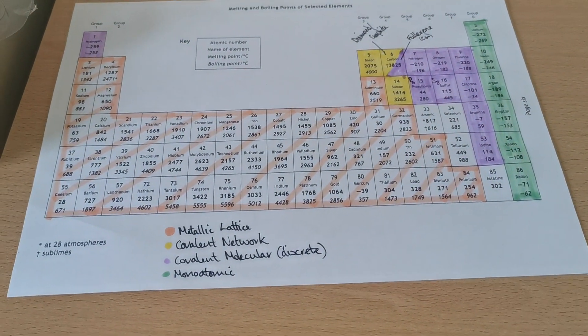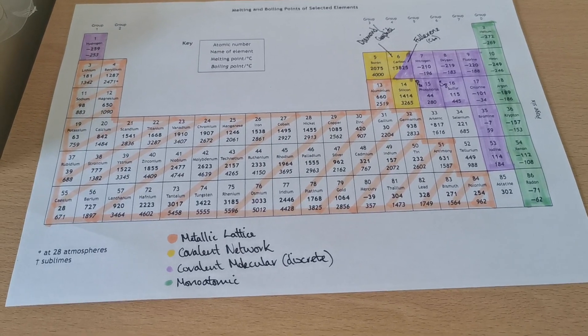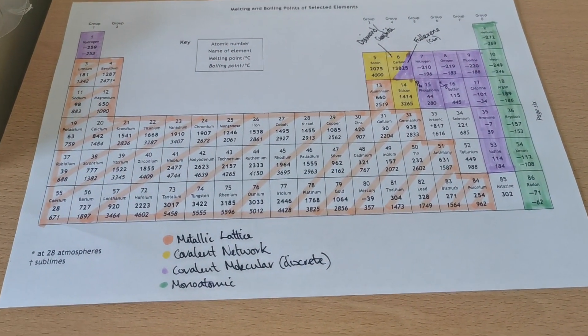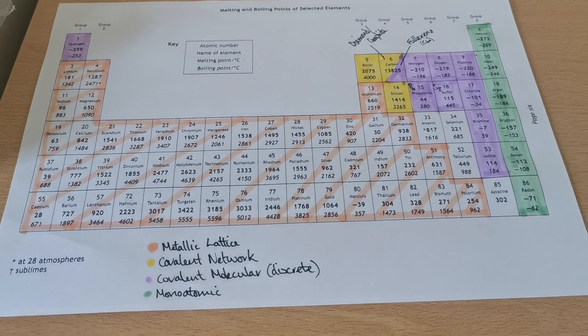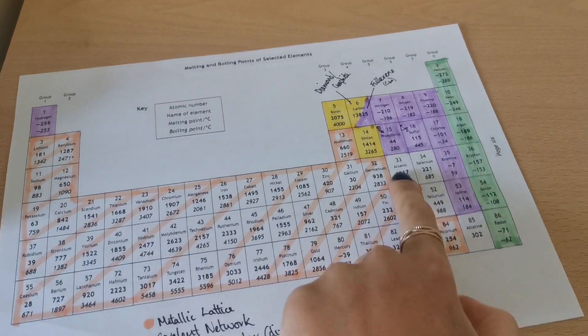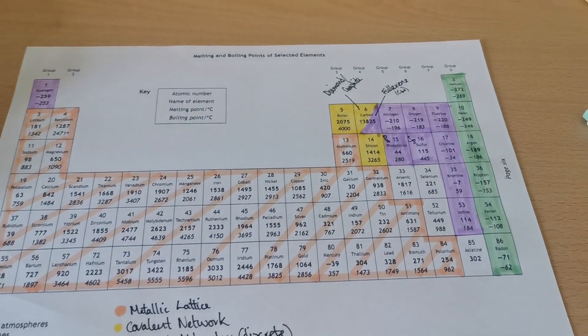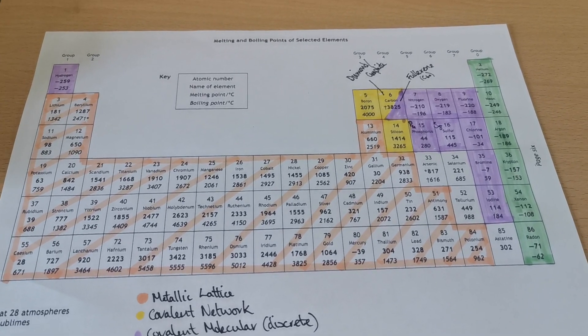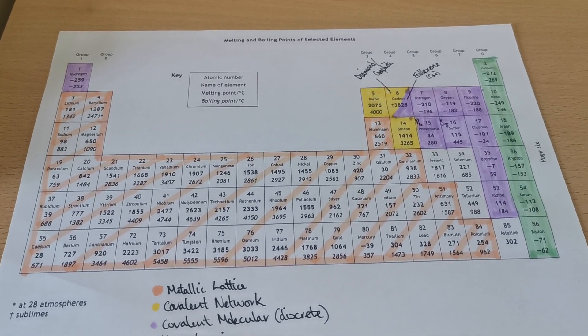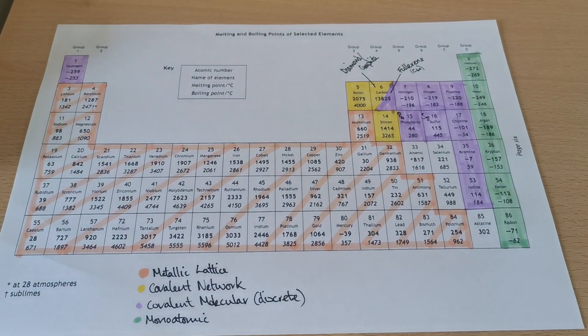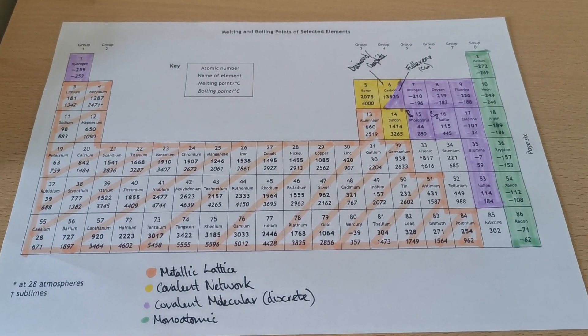Sometimes you only see these colour-coded periodic tables for the first 20 elements, up to calcium. And sometimes you'll only be asked about structures of those elements. But I think it's quite good to see the majority of them. You'll notice there are a few that aren't coloured in, and that's just because you don't really get asked about them. So as long as you have the main ones that are coloured in here, and you can remember their structures, that's what you're really trying to achieve from this.